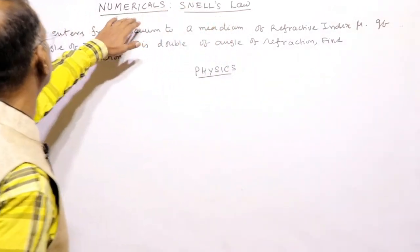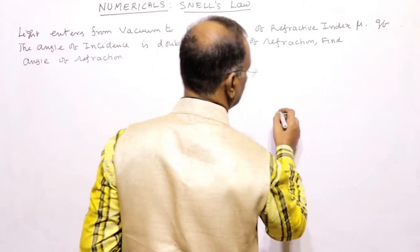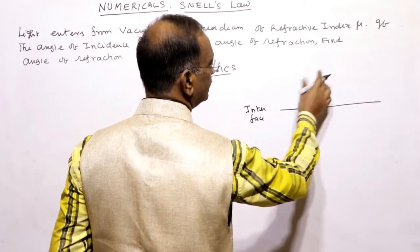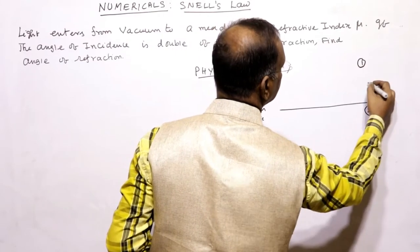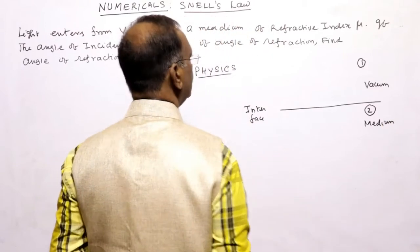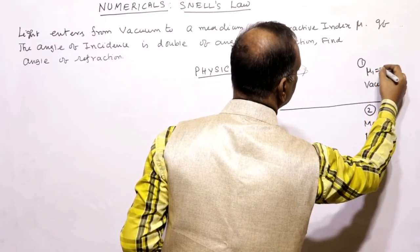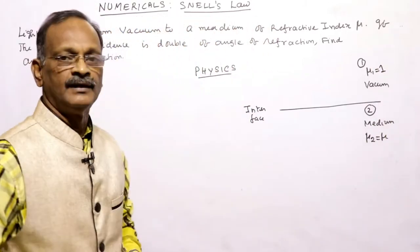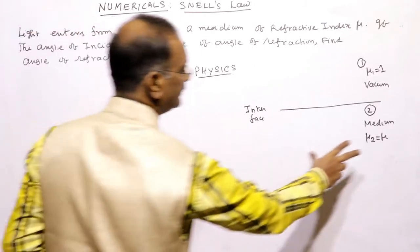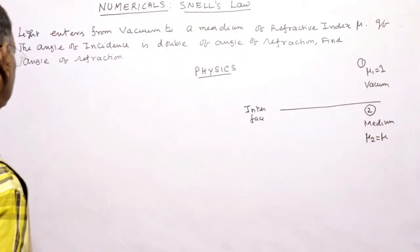Numericals on Snell's law. Light enters from vacuum to a medium of refractive index mu. This is an interface, the boundary separating medium 1 (vacuum) and medium 2. The refractive index in the second medium is mu, and in the first medium, since it is vacuum, it is equal to 1. So mu2 = mu and mu1 = 1.